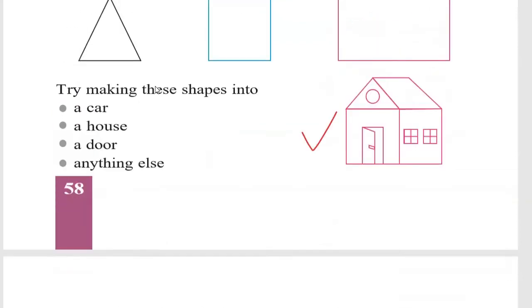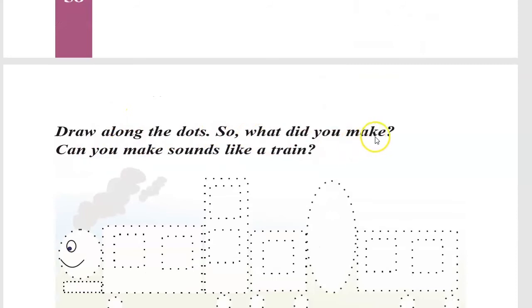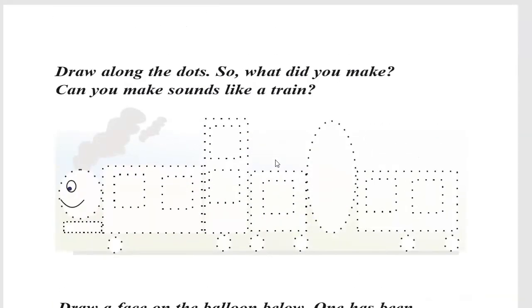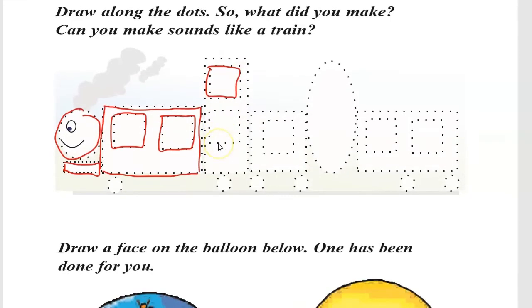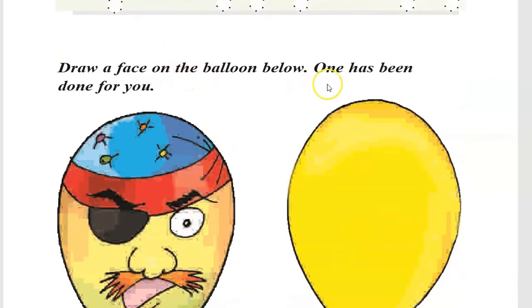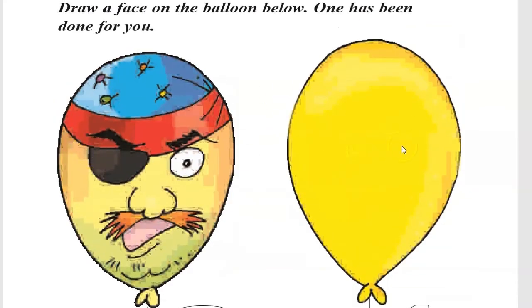Draw along the dots. Can you make sounds like a train? And you have to draw and color. Join the dots and do it like this. I hope you understand how to do it. Now draw a face on the balloon below. One has been done for you.